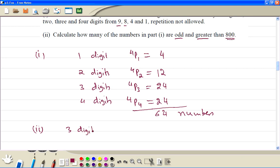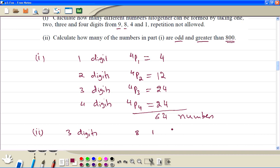So when we have 3 digits, suppose we are starting with 8, then we can finish with 1, then we have 2 choices to put it here. So this could be 9 or 4.